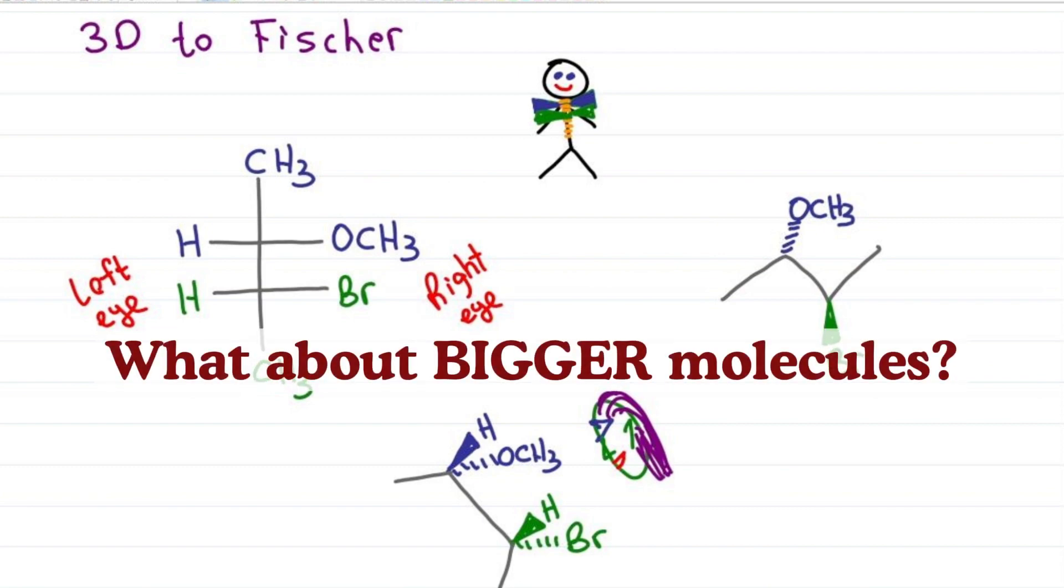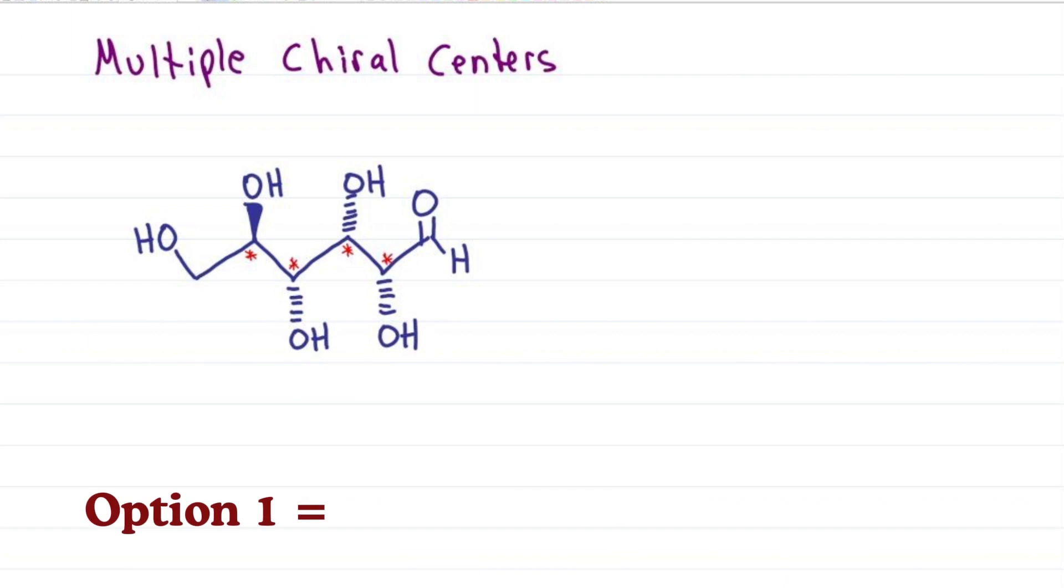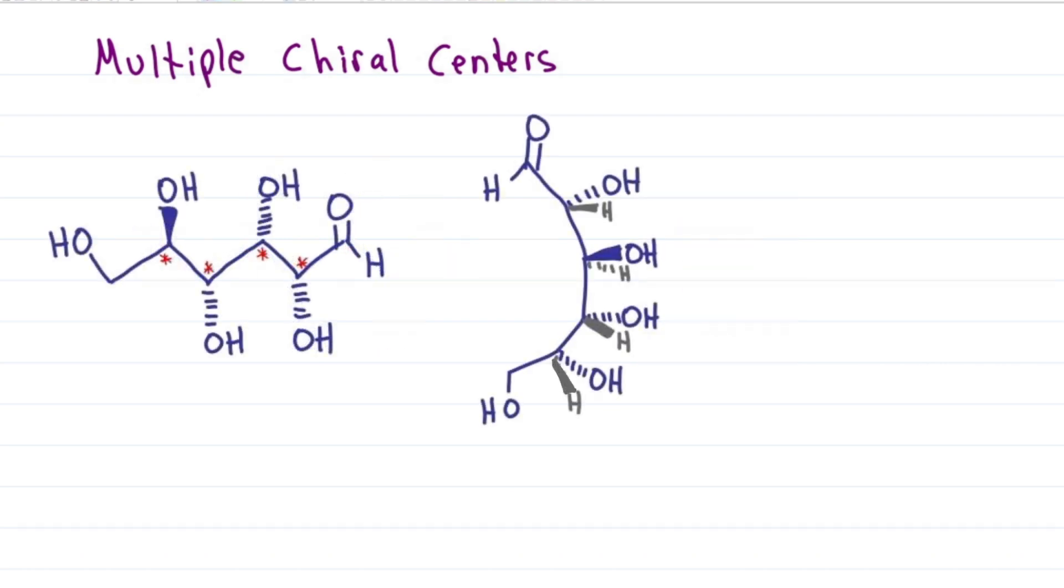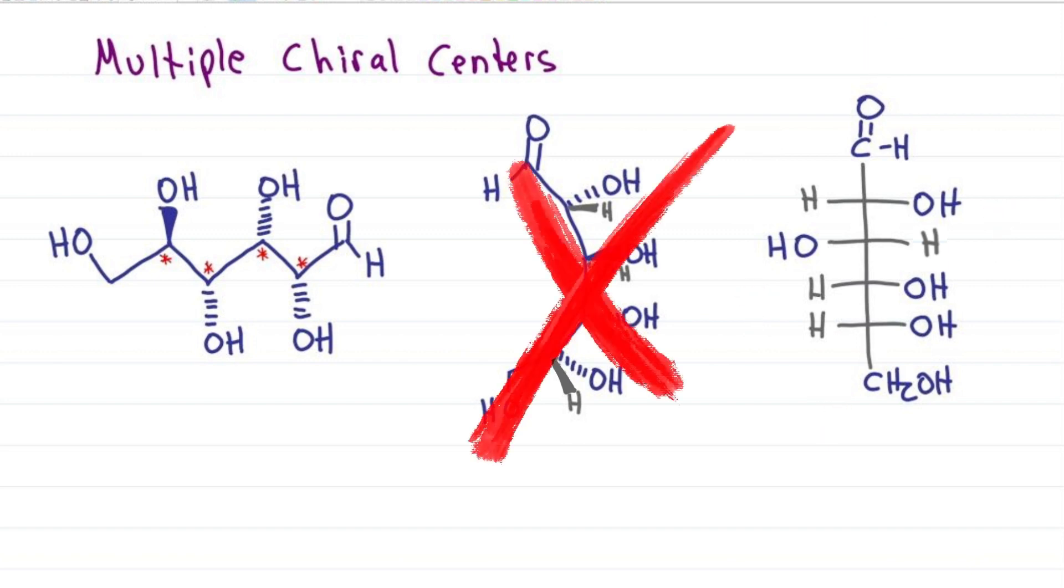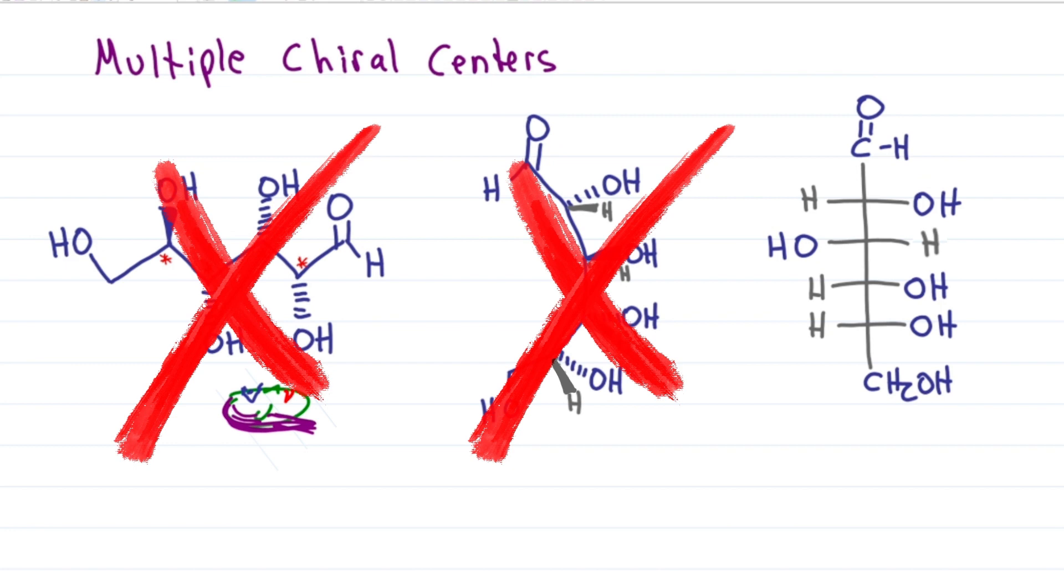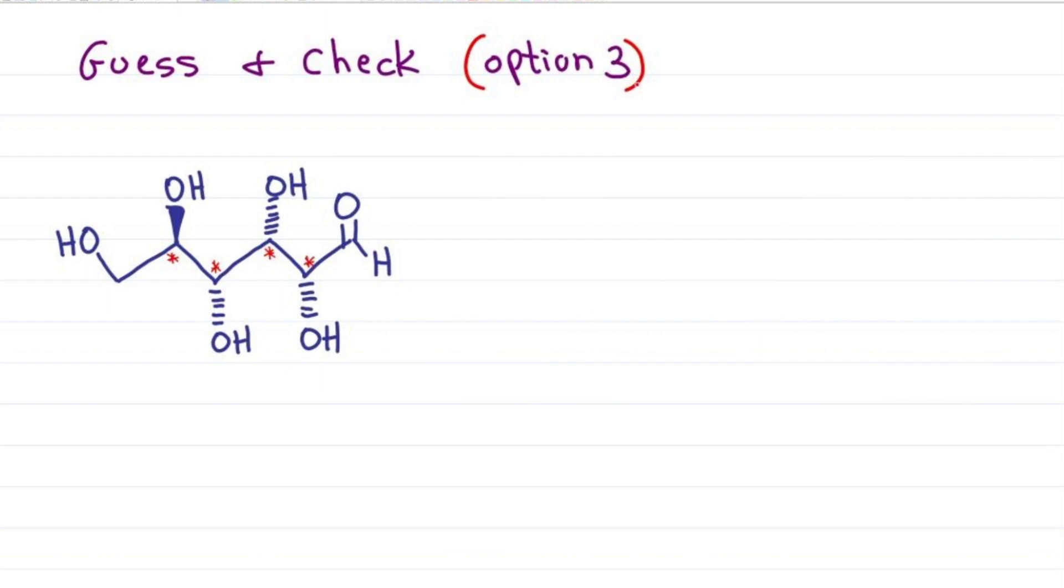But even this method becomes overwhelming when you're dealing with larger molecules like glucose with four chiral centers. Option one, you can rotate all the chiral centers so that Mr. Organic Chemistry has four bowties. Then you place your head to the side, see what lines up with your right and left eye, and draw it accordingly. Once you pass three chiral centers, this method is not only tedious, but it gets very confusing. Option two, you can take your starting molecule and put your head above or below, remembering that any chiral carbon away from you has to be rotated. But even this can get confusing.